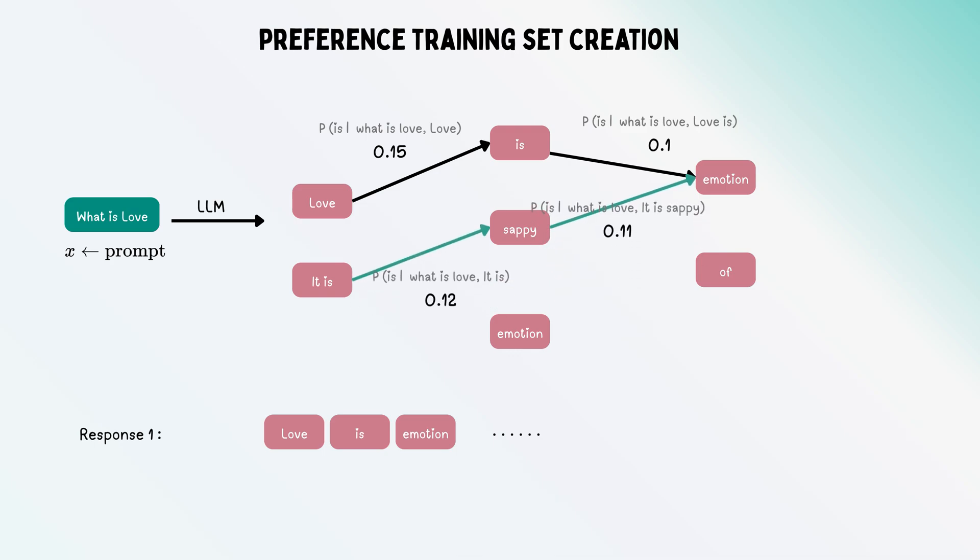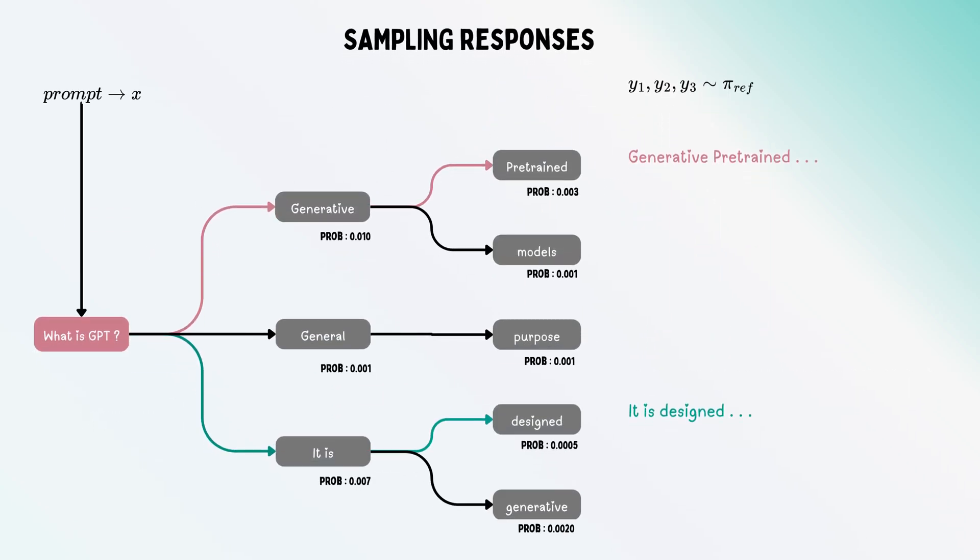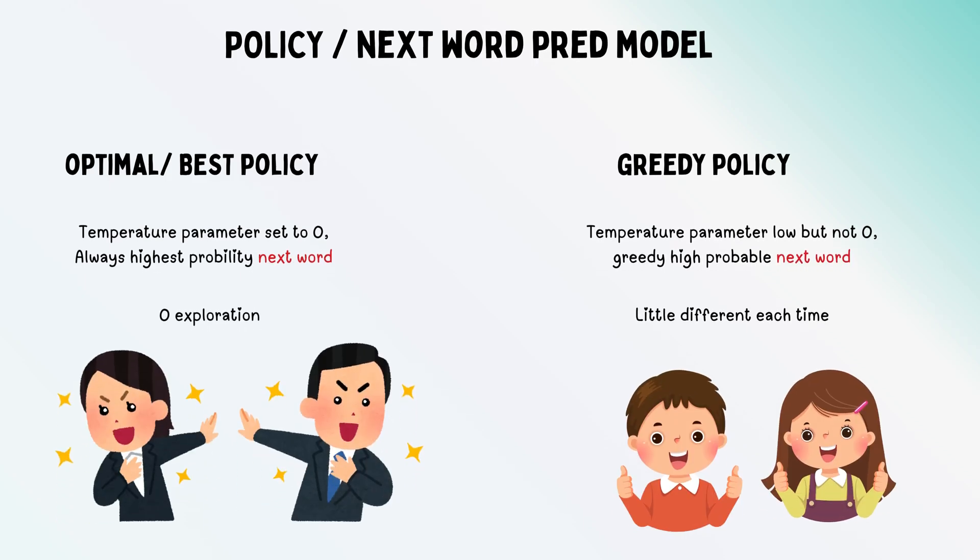How is it possible? At each word, there are various possibilities—it's a probability space. You sample the first word, then you have 120,000 possibilities again. Here we have two choices: go with the optimal policy or choose a greedy policy.